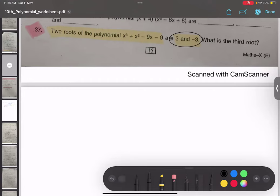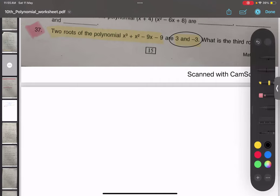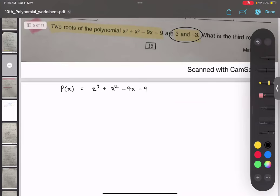If we have these two as the roots - roots means zeros - my polynomial is x³ + x² - 9x - 9. And as they have told us, 3 and -3 are the zeros or roots.